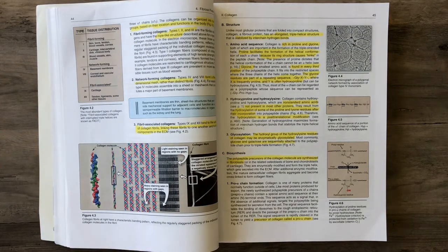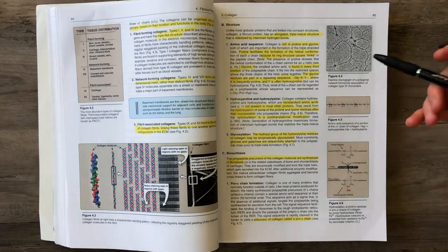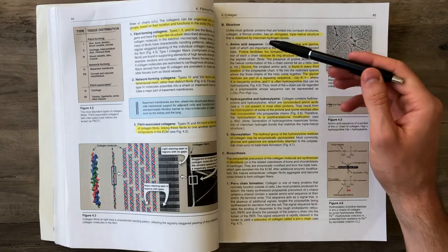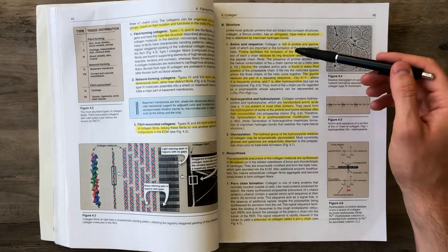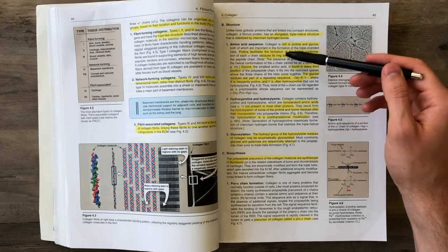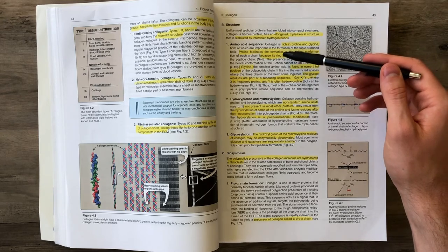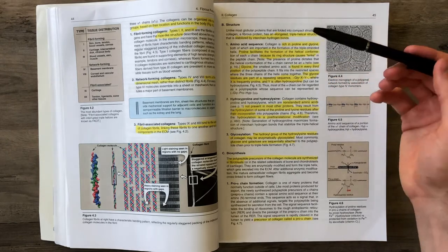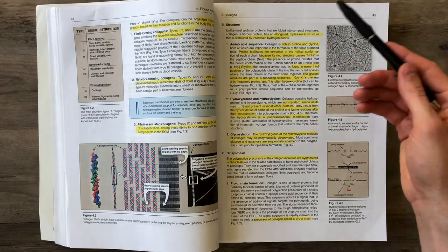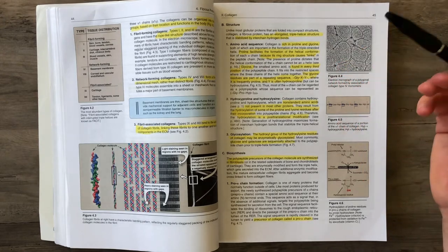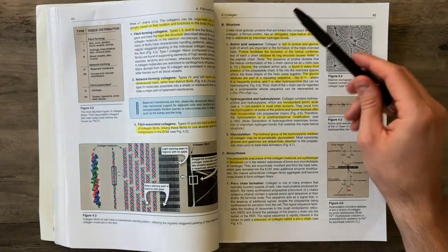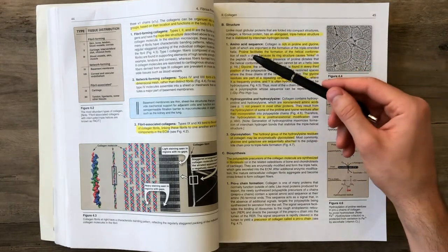When it comes to the actual structure of collagen, it's really rich in two amino acids, proline and glycine. Proline has a structural ring within it, which allows it to get this kink within the actual structure, creating that helical structure. So it allows the collagen molecule, that alpha chain, to kink and spiral around.